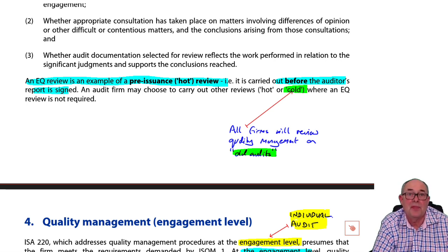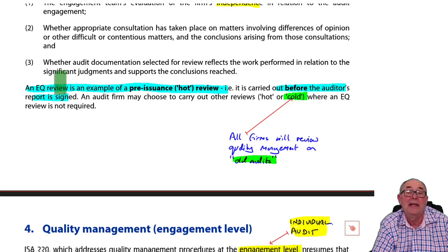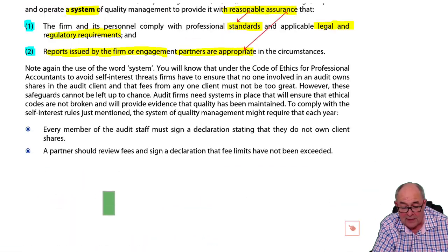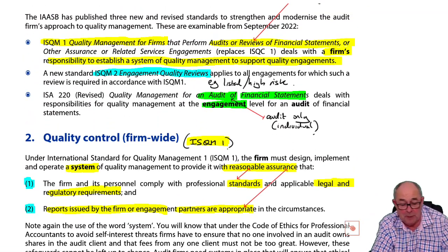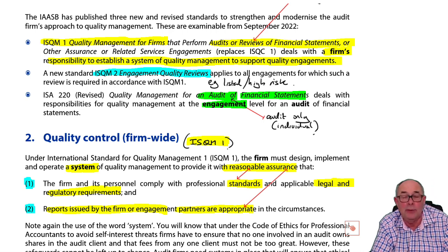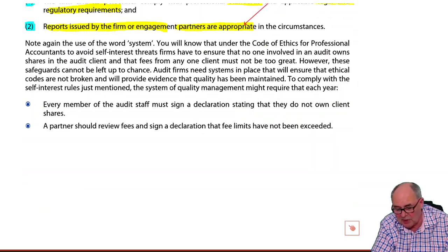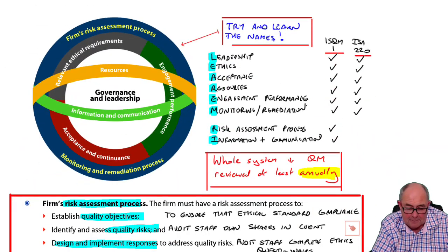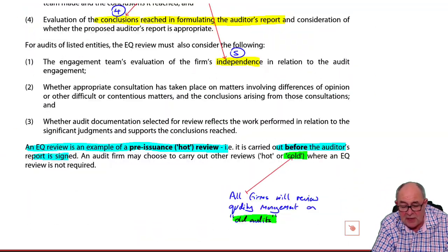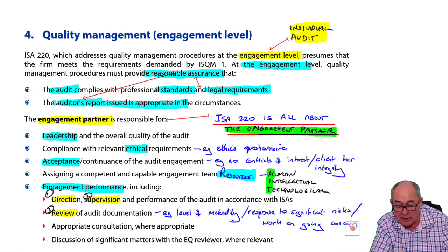So that is ISQM 1 and ISQM 2. ISQM 1 had eight components of quality management at the firm level. ISQM 2 was specifically about one of those components. Finally, ISA 220 looks very similar to ISQM 1, except there are only six components. The thrust of ISA 220 is to speak specifically to the engagement partner on the individual audit.